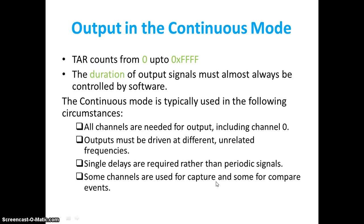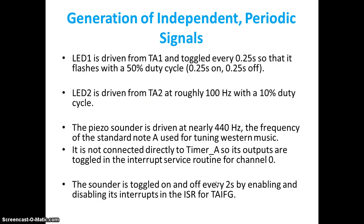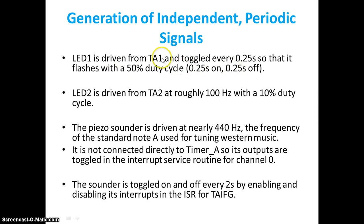Let us take an example: generation of independent periodic signals. LED 1 is driven by Timer A1 and toggled every 0.25 seconds so that it flashes with a 50% duty cycle — it needs to turn on for 0.25 seconds and turn off for 0.25 seconds. How we can derive that, I will discuss.